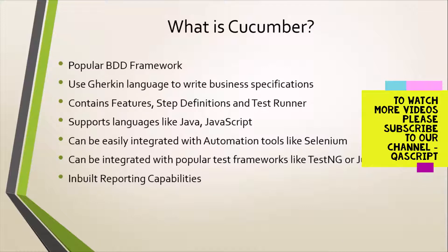In terms of language, you can write Cucumber in different languages — you can write it in Java, JavaScript, Python, and more may have been introduced since this video was made. It can be easily integrated with automation tools like Selenium, and that's the whole purpose. We are looking at the Cucumber framework because we want to integrate this framework with Selenium, which is our automation tool.